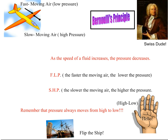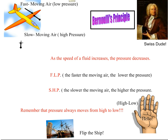Going back to our diagram, we have high pressure at the bottom and low pressure at the top of the wing. Because air moves from high to low pressure, it creates an upward movement, and what we are creating is lift — the plane moves upwards. That's basically Bernoulli's principle in a nutshell.